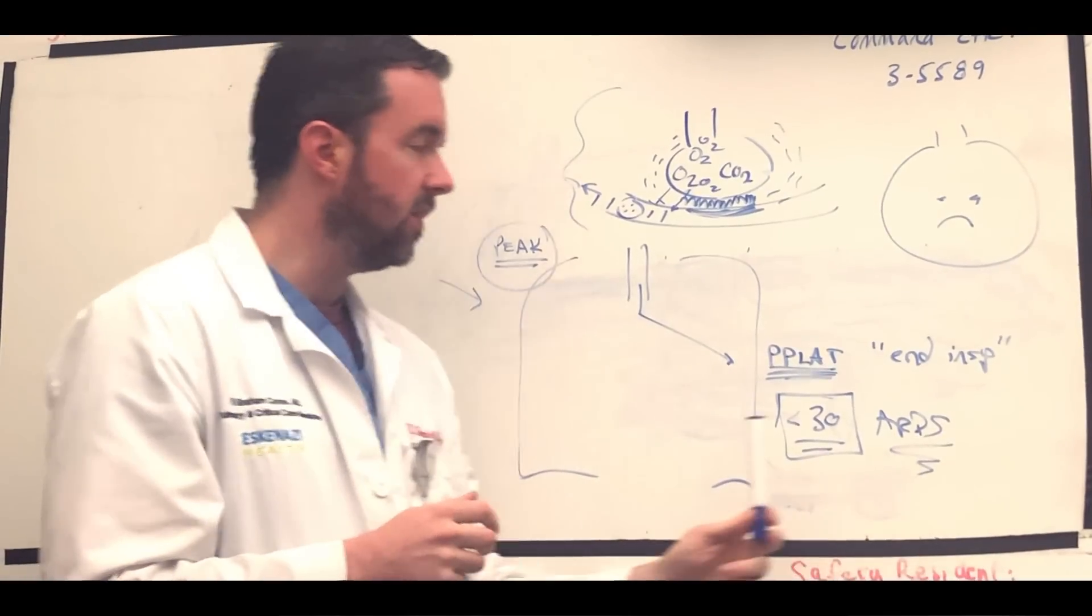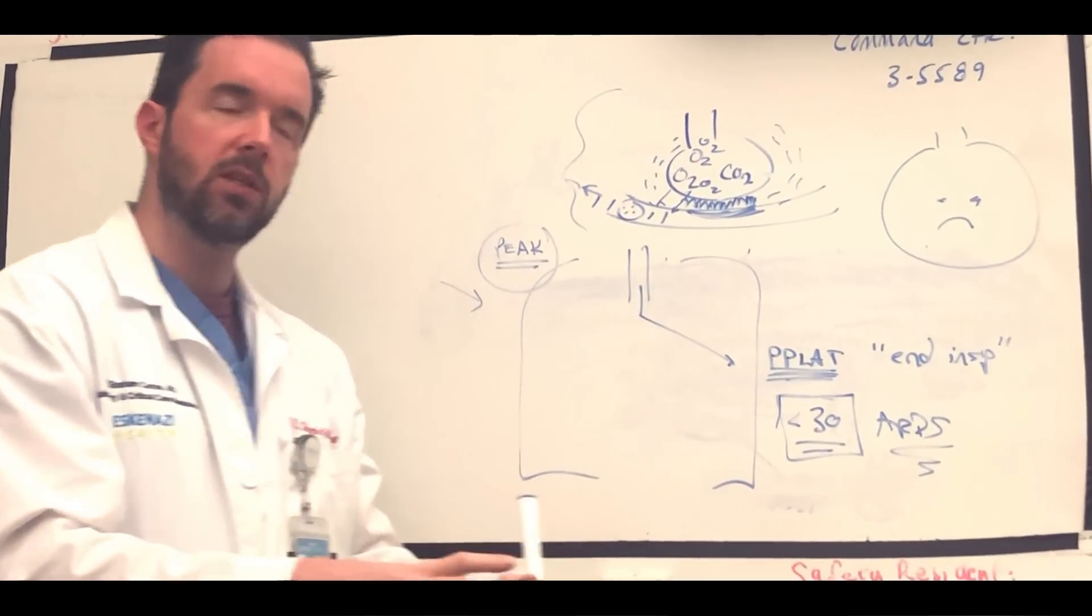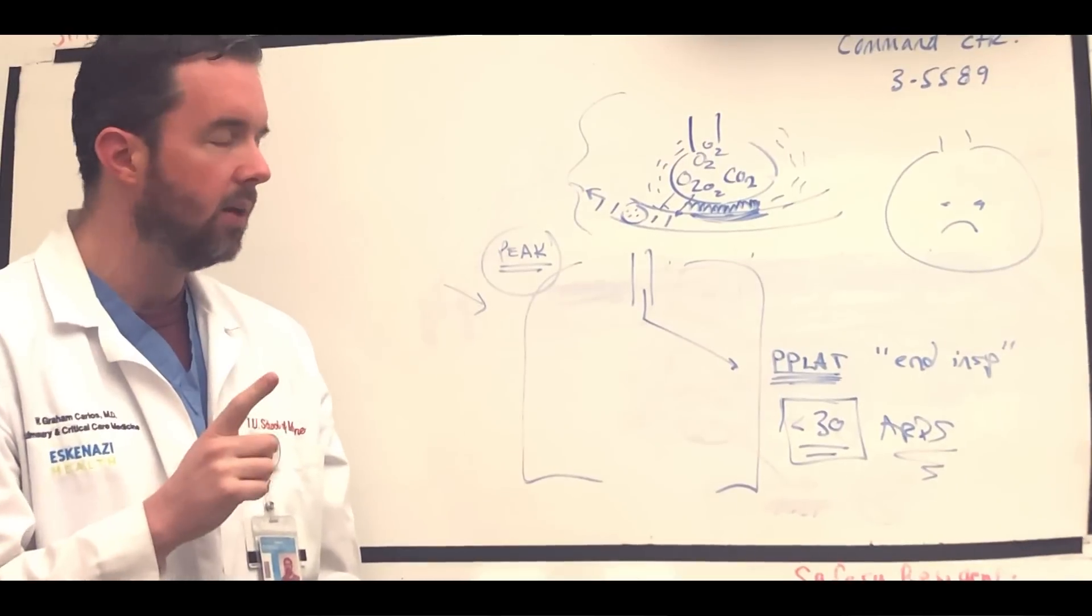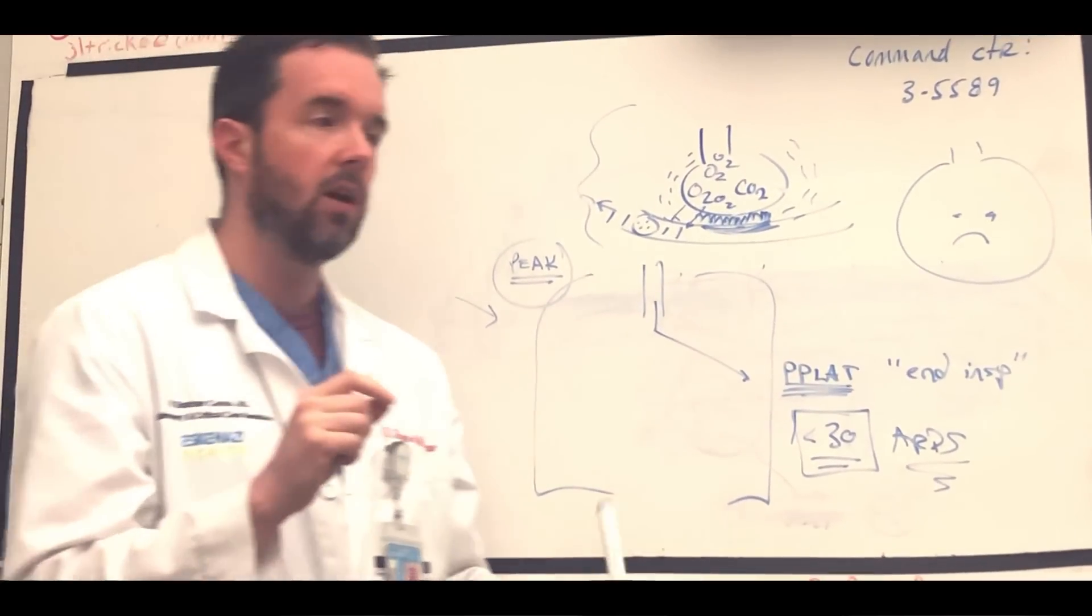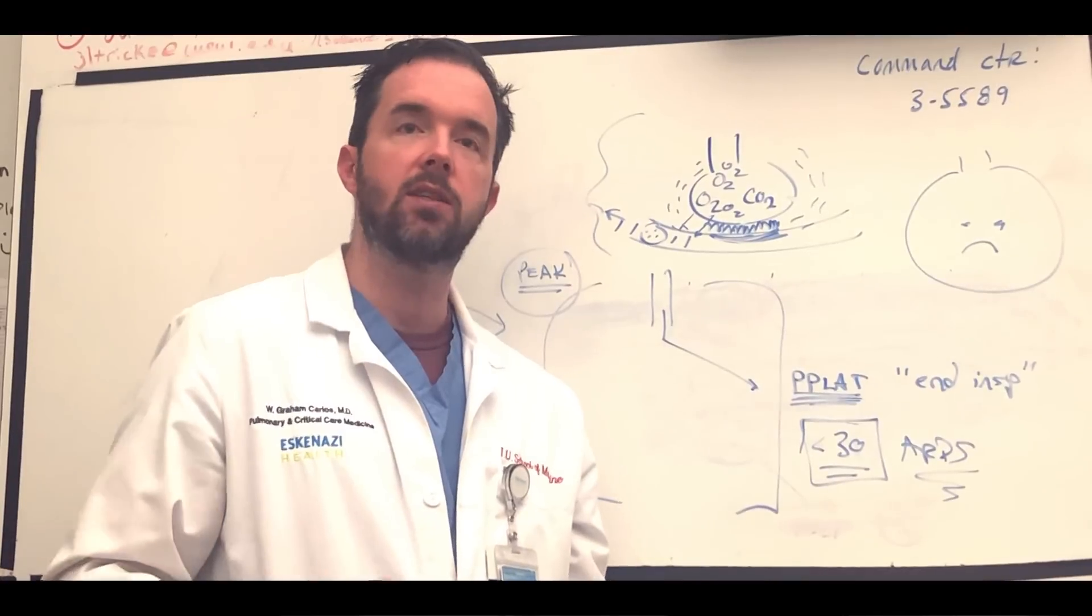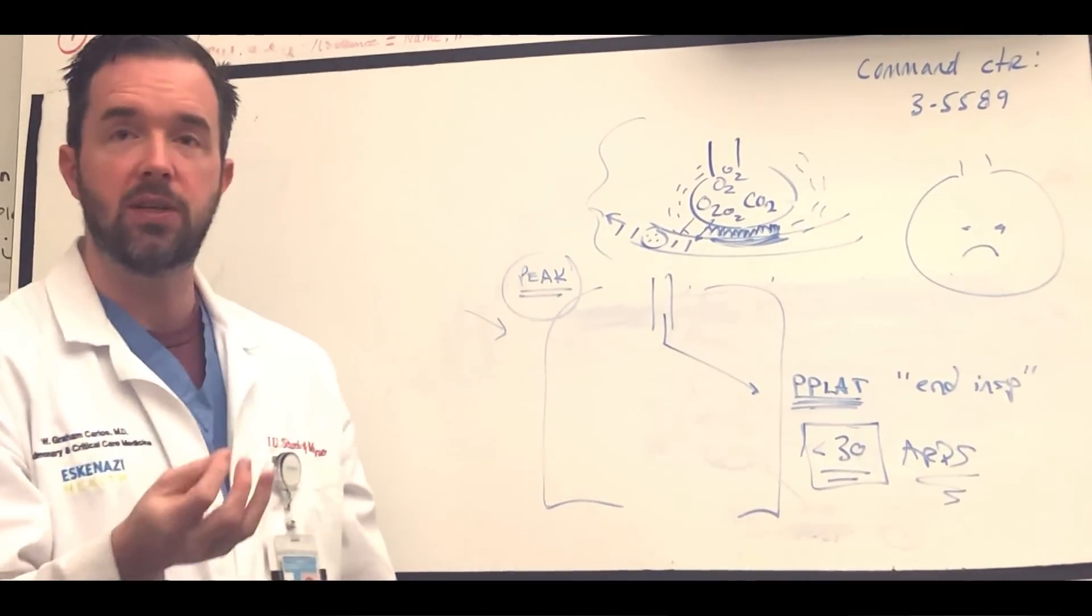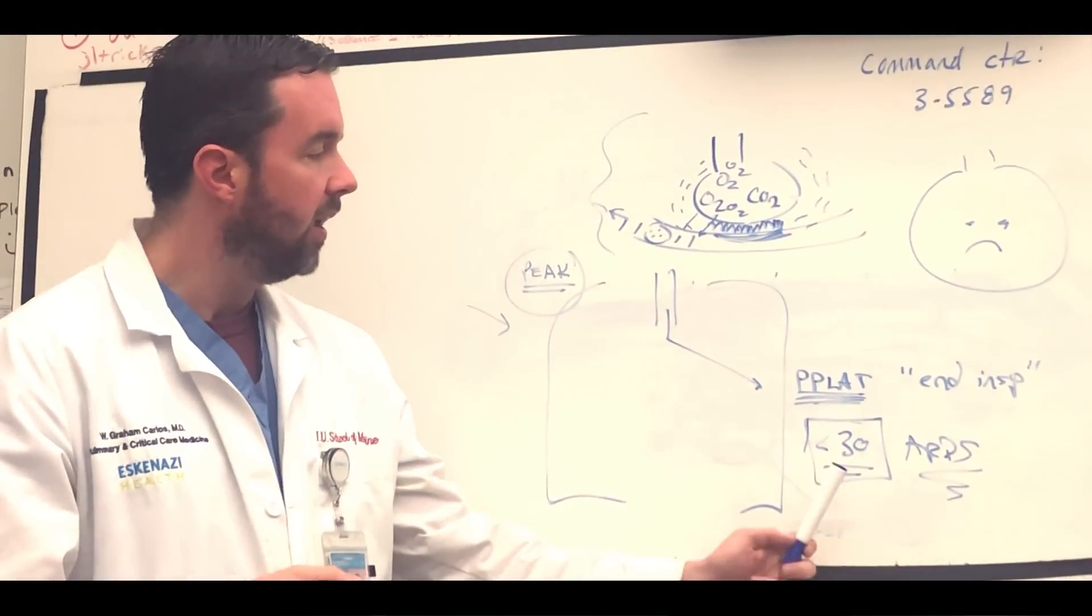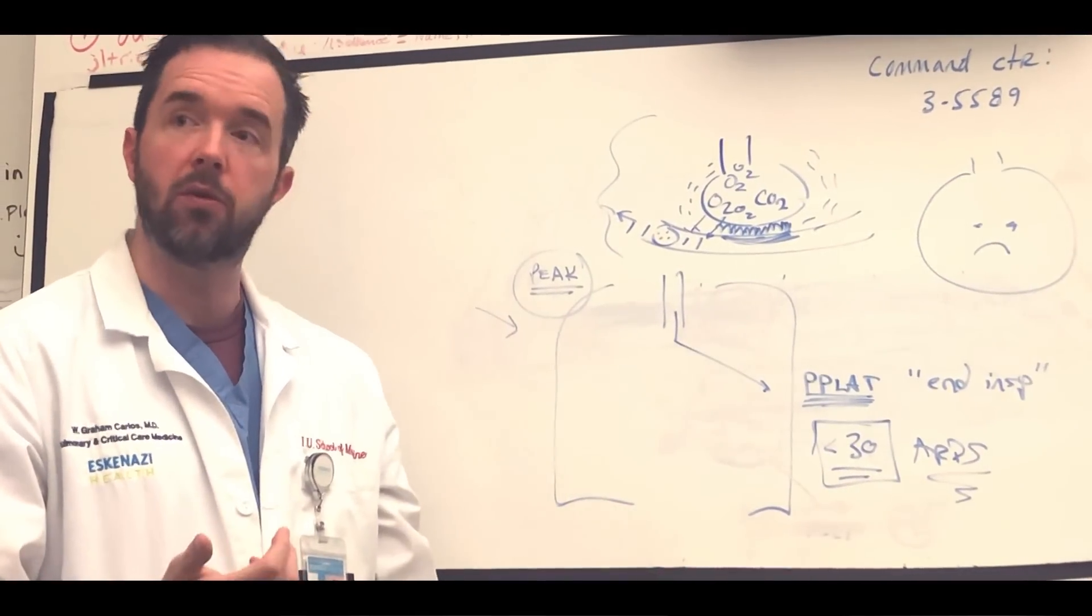In ARDS specifically, we keep tidal volumes low, six mils per kilo predicted body weight. Remember that in ARDS, your lungs don't increase in size as your body habitus increases. Your lung size is based on your height. That's why it's predicted body weight in that calculation. And we try to keep the plateaus under 30.